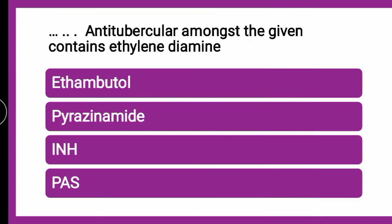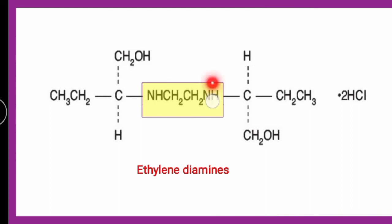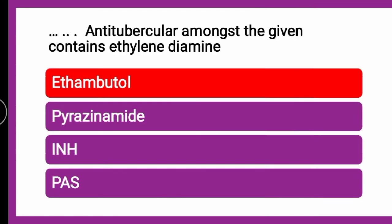The next question is: Which antitubercular drug amongst the given contains an ethylene diamine group? Whether it is ethambutol, pyrazinamide, INH, or PAS? The correct answer is ethambutol. As you can see in the structure, CH₂CH₂-NH-NH — this is the ethylene diamine group which is present in ethambutol, the antitubercular drug.